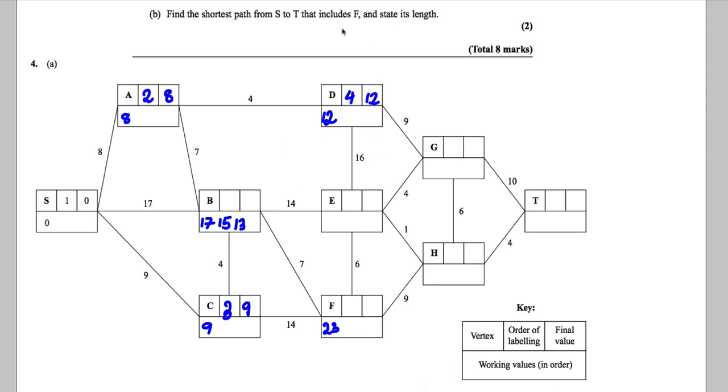You go from this one now, the permanently labeled, in every direction you can. So 12 at 9 is 21, which you write here. 12 at 16 is 28, which you write here. You can't go back on yourself. That one's already permanently labeled.